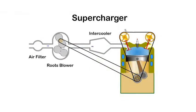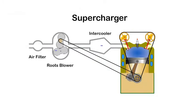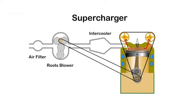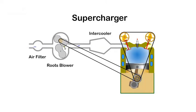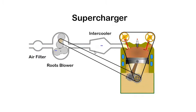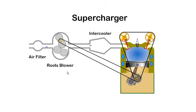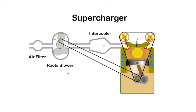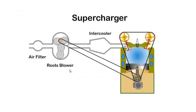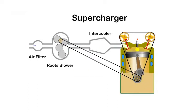On the intake stroke we want to get as much air into the cylinder as possible. Air intake can be improved by pressurizing the incoming air with a pump driven by the engine. The pump is called a supercharger and in this case a roots blower is used. This system improves air intake, however the belt driven blower takes power from the engine.